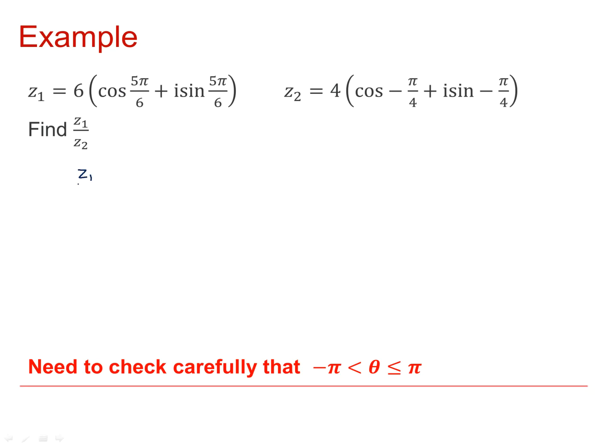OK. Z1 over Z2 is equal to 6 over 4 multiplied by cos of 5 pi over 6 take away minus pi over 4. That comes out to be 3 over 2 cos 13 pi over 12 plus i sine 13 pi over 12.